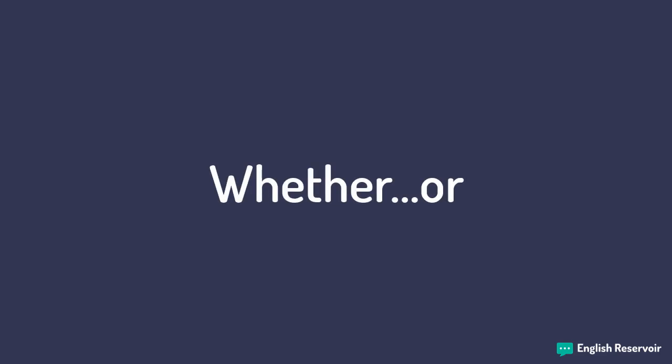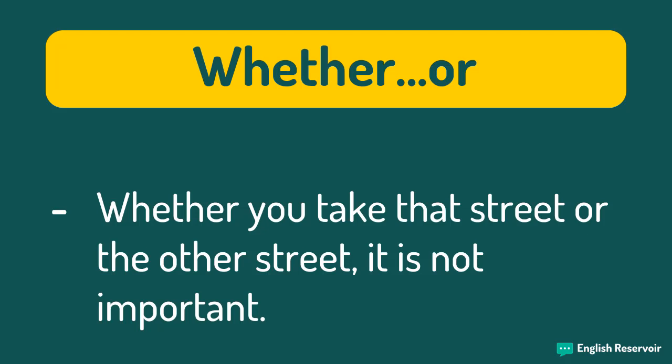Whether or. Whether or is somewhat similar to either or, such that you have a choice between two options. However, whether or is a little different in that we normally give a consequence or effect, depending on either one of the options being true or both of them being true. For example: 'Whether you take that street or the other street, it is not important.' Here we use whether or to give two options followed by an effect or consequence — it's not important which street you take. In this case, you can take both options but the result will still be the same.